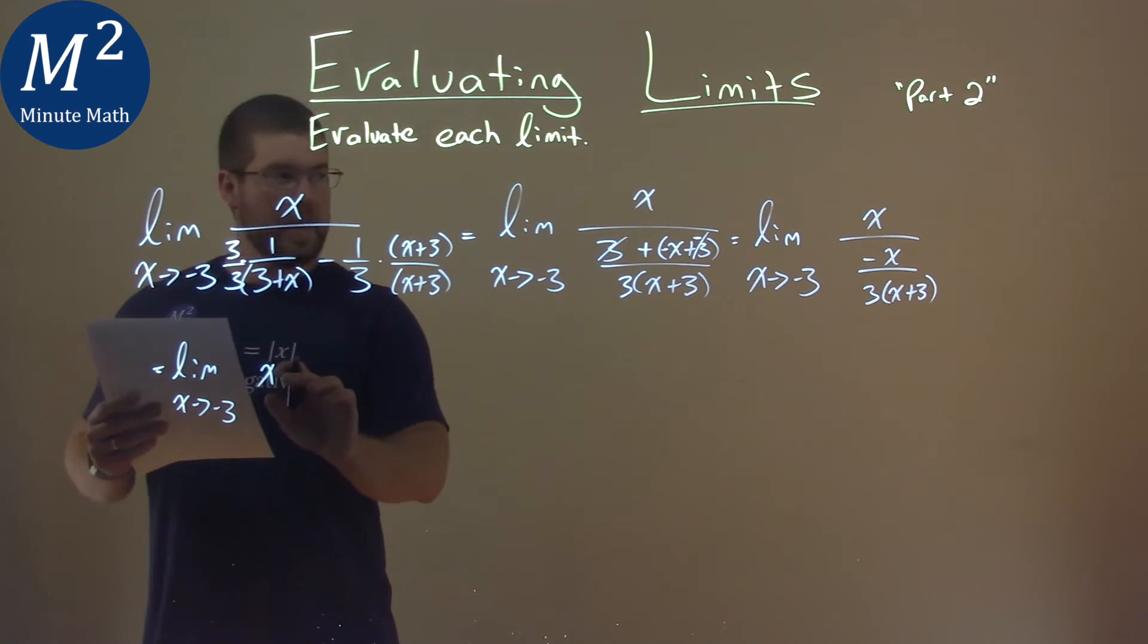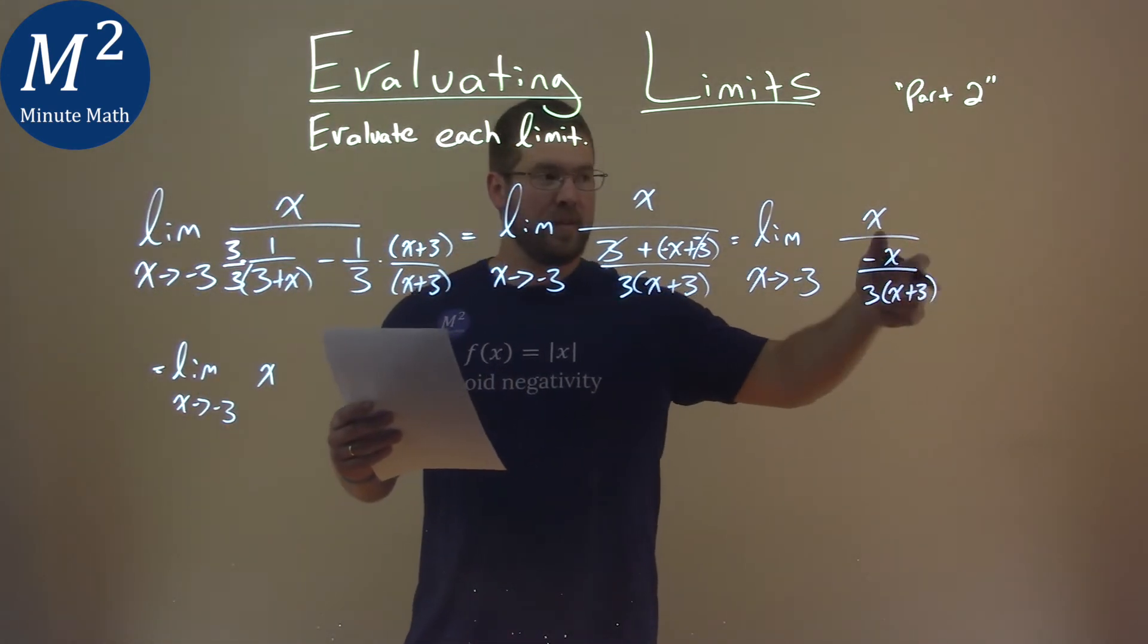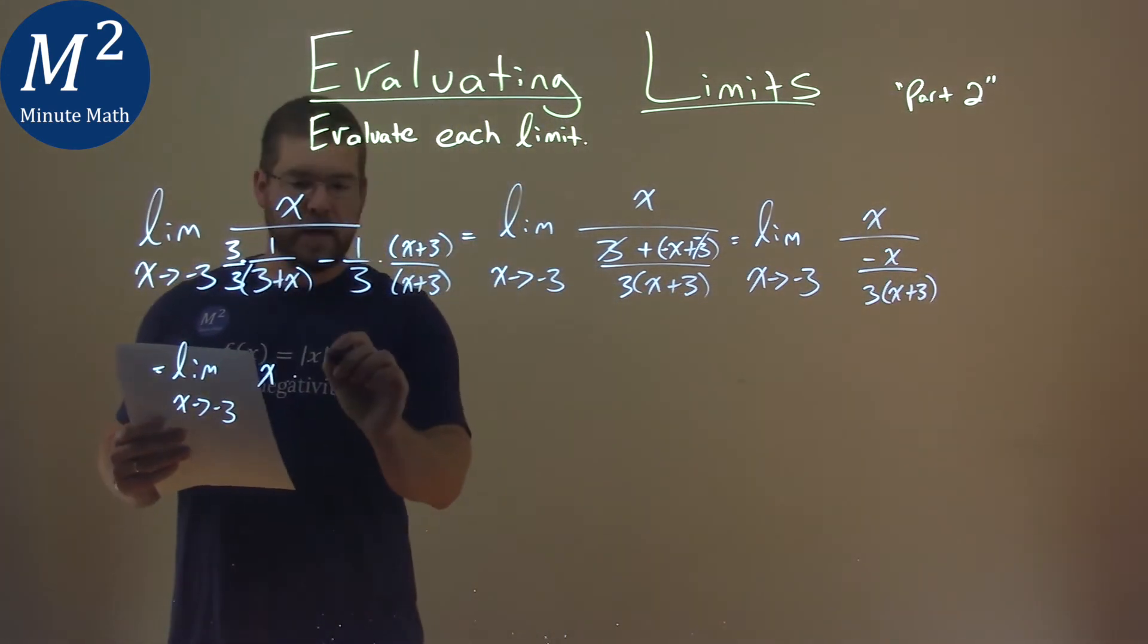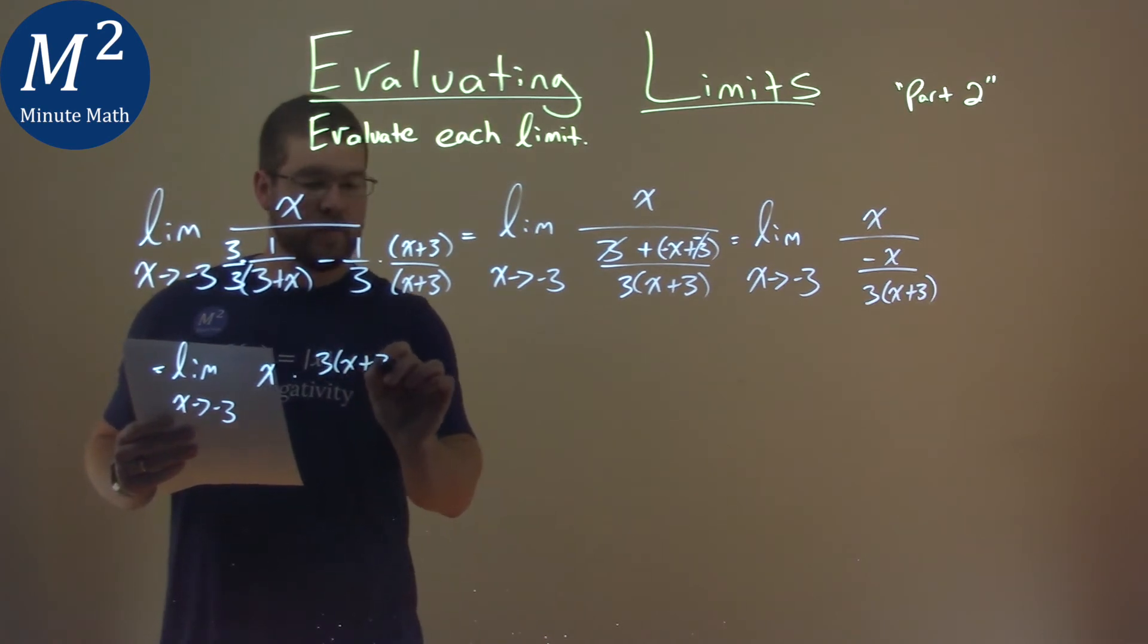and instead of dividing by this fraction, we multiply by the reciprocal. Multiply by 3 times (x plus 3) over negative x.